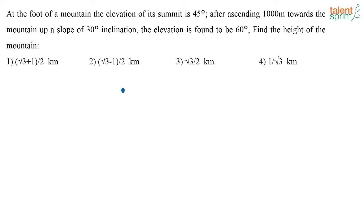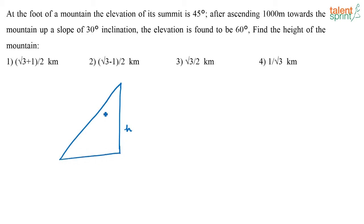Let the height of the mountain be h. This is the steep climb or elevation of the mountain. At the foot of the mountain the elevation of its summit is 45 degrees — so this angle is 45 degrees. Somebody is ascending 1000 meters towards the mountain up a slope of 30 degree inclination, basically trying to climb this mountain at a slope of 30 degrees.